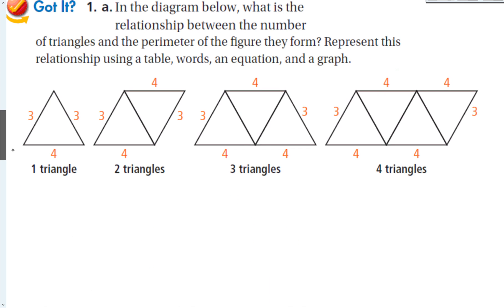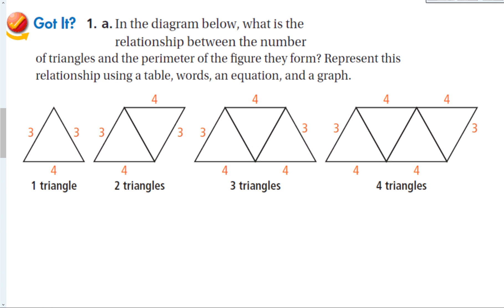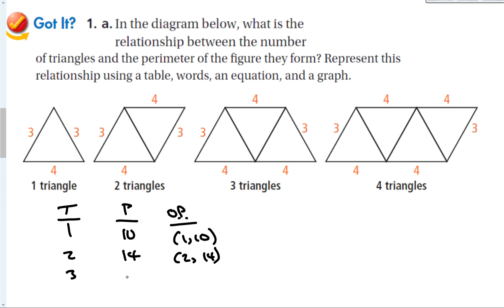Now let's look at the guided problem. The diagram shows triangles — what is the relationship between the number of triangles and the perimeter of the figure they form? Making a table: one triangle gives a perimeter of 10, so ordered pair (1, 10). Two triangles gives 14, so (2, 14). Three triangles gives 18, so (3, 18). And four triangles gives 22, so (4, 22).